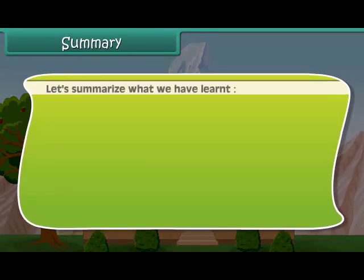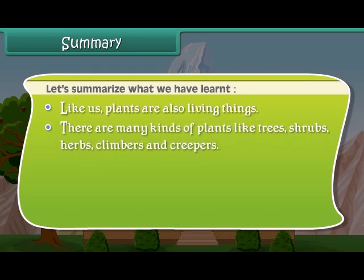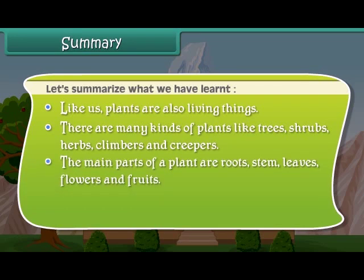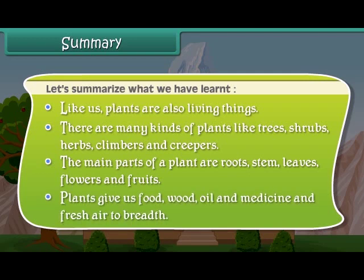Now friends, let us summarize what we have learned so far. Like us, plants are also living things. There are many kinds of plants like trees, shrubs, herbs, climbers and creepers. The main parts of a plant are roots, stem, leaves, flowers and fruits. Plants give us food, wood, oil, medicine and fresh air to breathe.